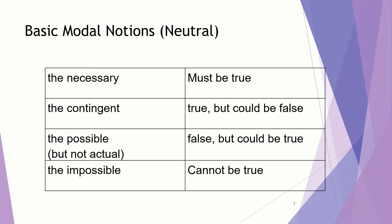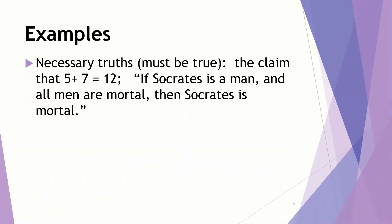Let's consider some examples. Here are some necessary truths. These are things that have to be true, can't possibly be false. The claim that 5 plus 7 equals 12 is such a necessary truth. The full statement, if Socrates is a man and all men are mortal, then Socrates is mortal, that is a necessary truth. Or, Alvin Plantinga's favorite, no prime minister is a prime number. Justin Trudeau cannot be the number 7.